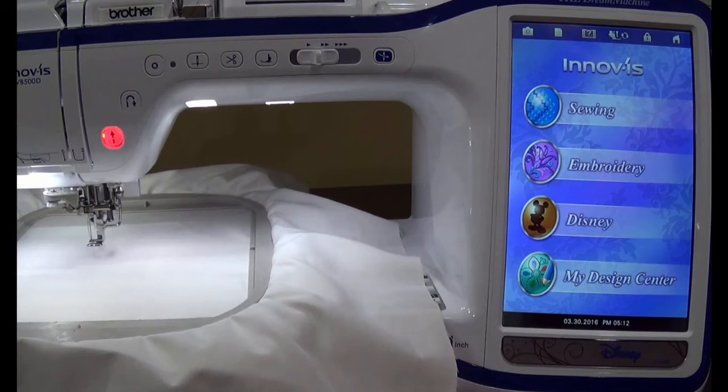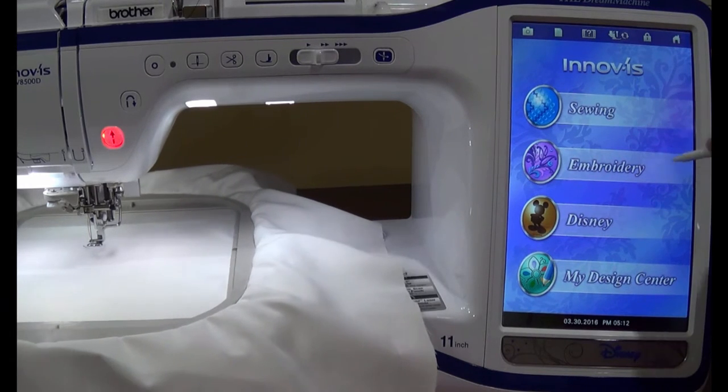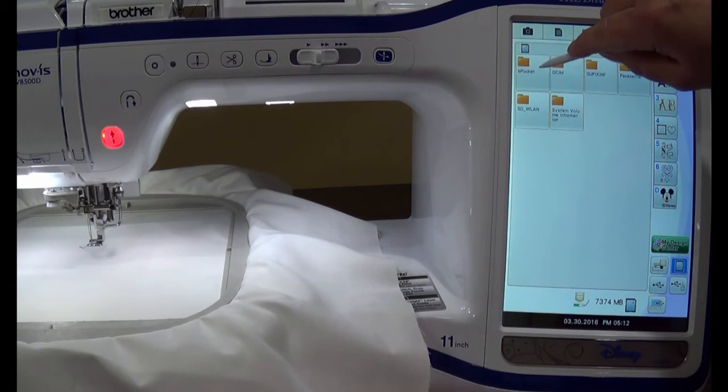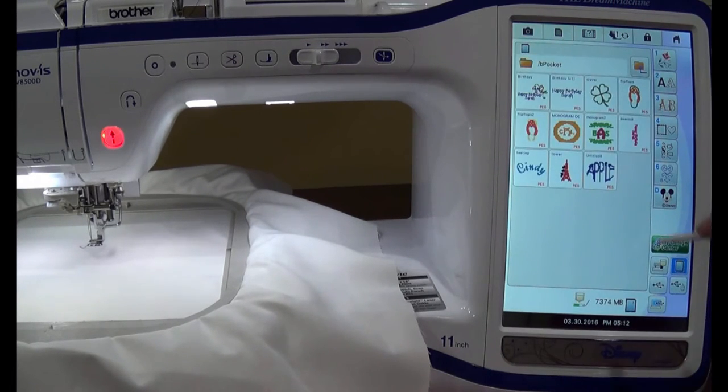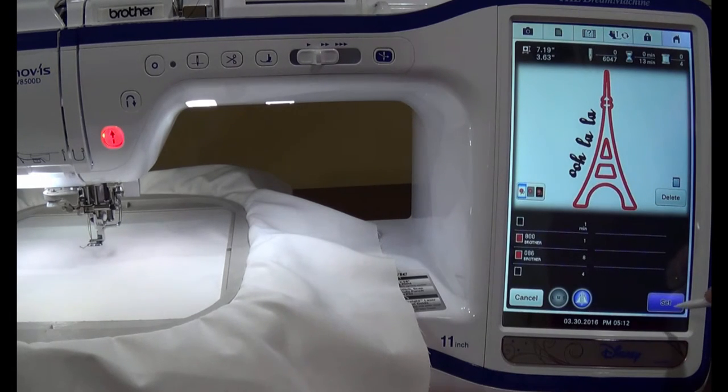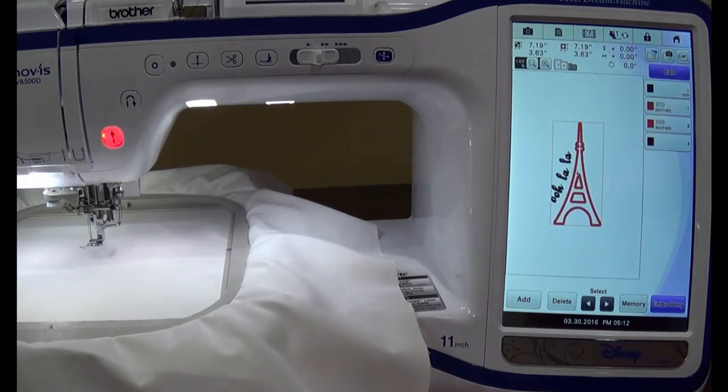Hoop the item to be embroidered and then load the hoop into the embroidery machine. At the embroidery machine, press Embroidery. Choose the SD card. Choose B Pocket and then choose the tower design. Press Set. Press Embroidery.